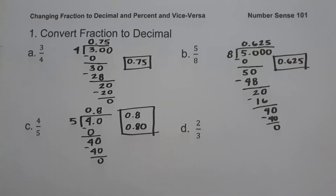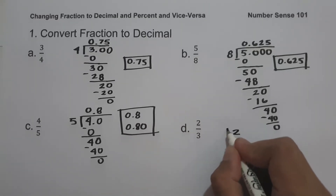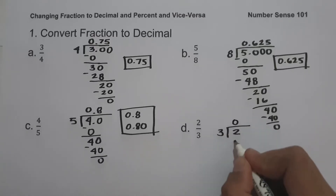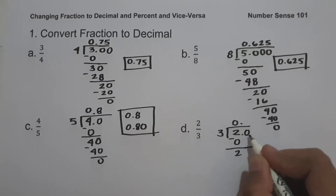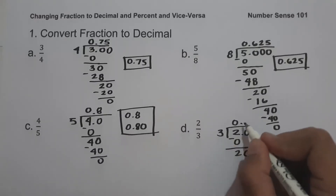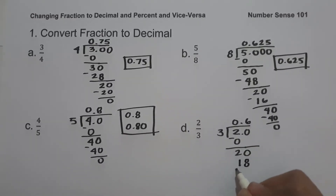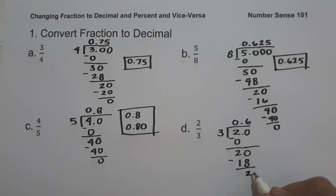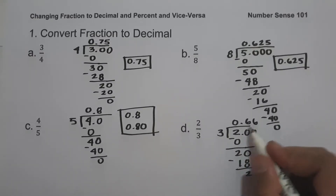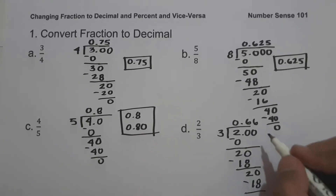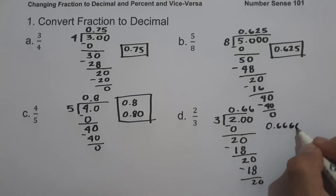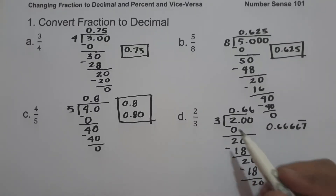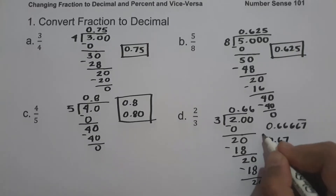On letter D, we have 2 thirds. So let us have 2 divided by 3. We add a decimal point and bring down 0. 20 divided by 3 is 6, and 6 times 3 is 18. 20 minus 18 is 2. Bring down another 0: 20 divided by 3 is again 6. As you can see, we have a repeating decimal. If we continue, we get 0.66667. So 2 thirds written in decimal is 0.67.